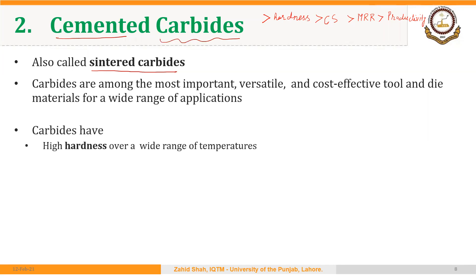Carbides have high hardness over a wide range of temperatures — in other words, they have high red hardness or hot hardness. They have a high elastic modulus, so they do not deform easily. They also have high thermal conductivity, which is important because heat is generated during machining and must be dissipated from the cutting tool so that the temperature doesn't rise too much and the tool does not develop what is called a built-up edge.